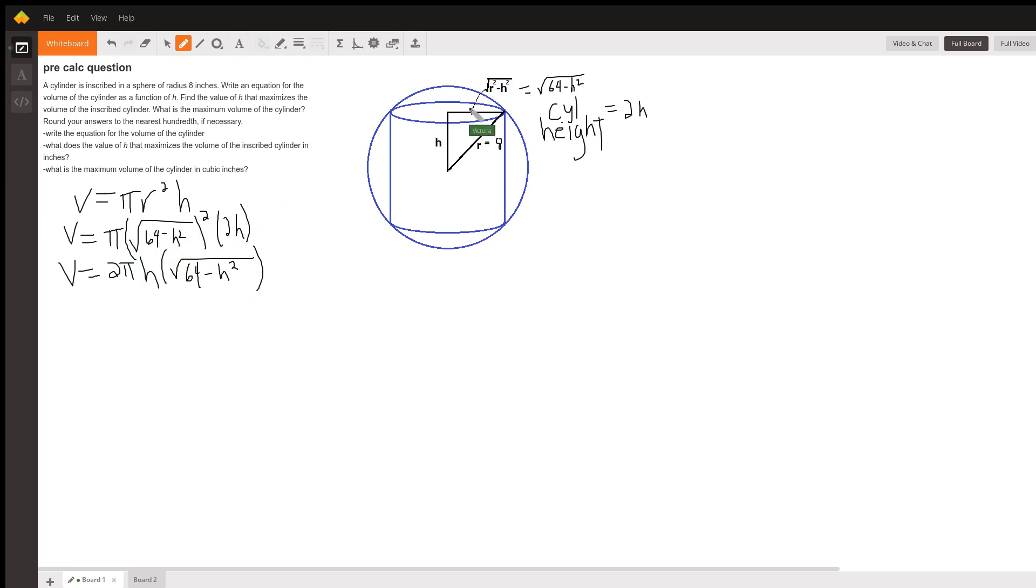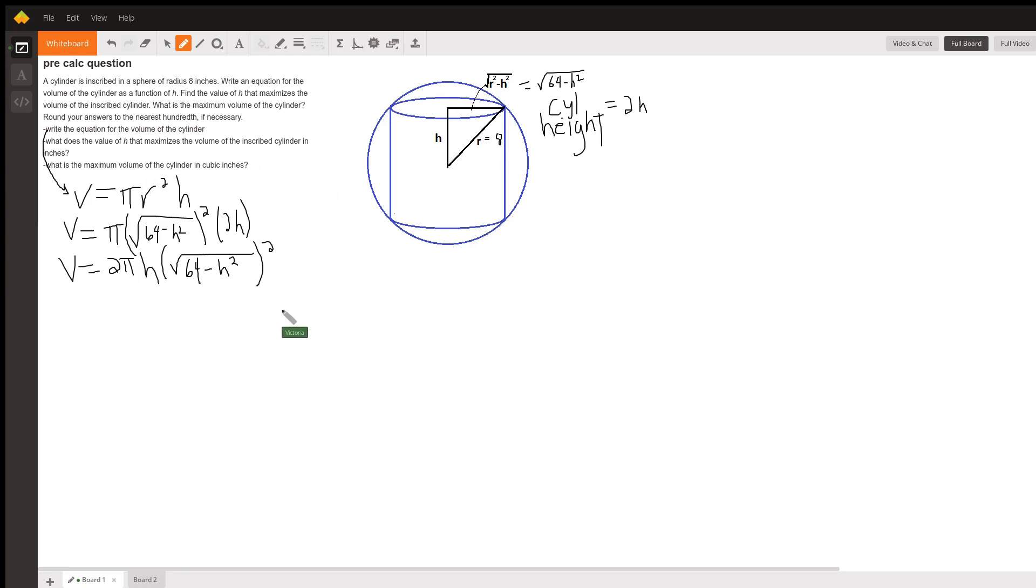Pi r squared—yeah, here's our r. And so here's the equation for the volume of a cylinder. And now we need to find the value of h that maximizes the volume of the inscribed cylinder. And so what we would do in calculus is we would take a derivative and set it equal to 0, but instead we're going to graph this.